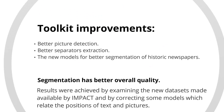In comparison to other state-of-the-art OCR systems, the newly developed IMPACT Project Toolkit contains the following improvements: better picture detection on the basis of better recognition of gradients, color variance, etc.; better separator extraction, which enables better detection of tables, columns, and running titles; and new models for better segmentation of historic newspapers. As a result, the segmentation has better overall quality. Results were achieved by examining new datasets made available by the IMPACT Project and by correcting some models which relate the positions of text and pictures.